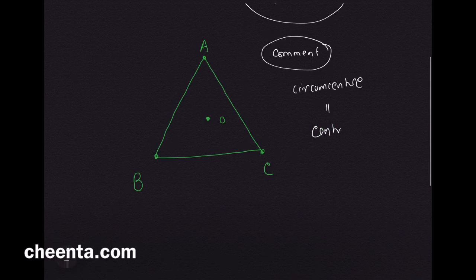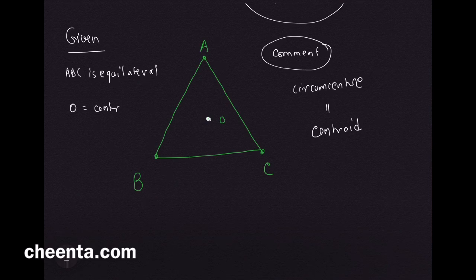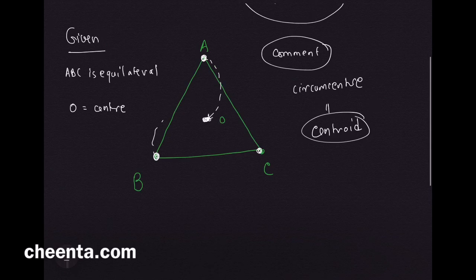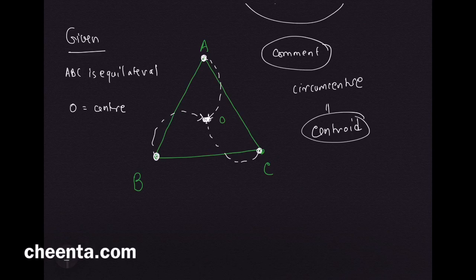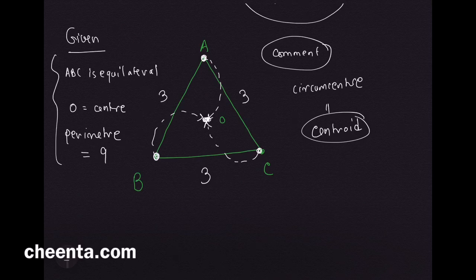Let's look at the given data. We have ABC is equilateral and O as the center, which is the circumcenter but can also be the centroid. We want to fold ABC in such a manner that A falls on O, B falls on O, and C falls on O, and find the area of the resultant picture. It's also given that the perimeter of this equilateral triangle is 9.